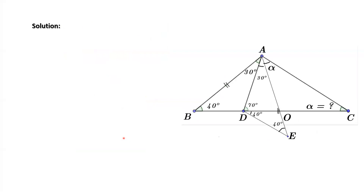First method: we construct a triangle which is congruent to triangle ABD. The new triangle is AED. The two triangles are symmetric with respect to the line AD.